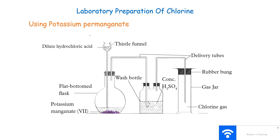And in this case, we don't need to do any warming like with manganese 4 oxide. And as such, since we have no warming, because our potassium permanganate is a stronger oxidizing agent than our manganese 4 oxide, in this case we can use a flat bottom flask.